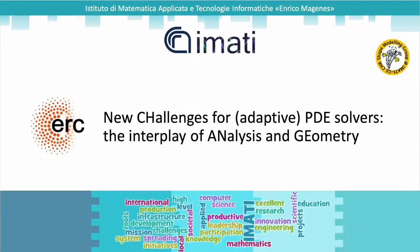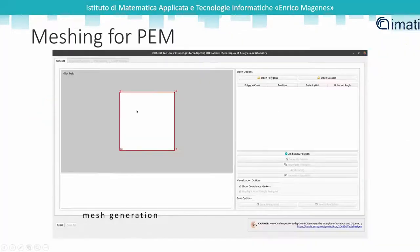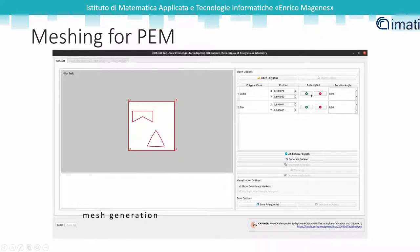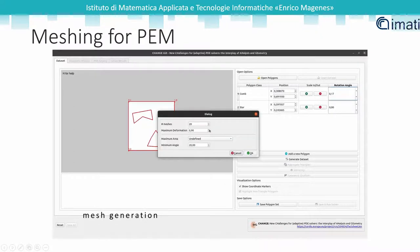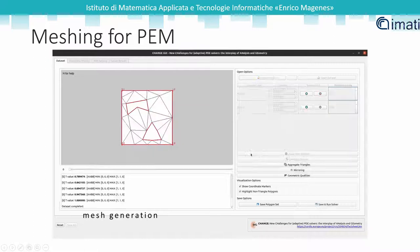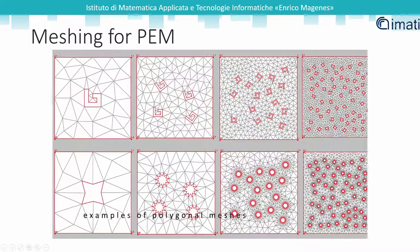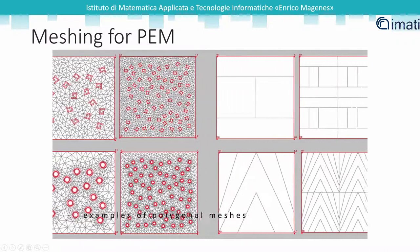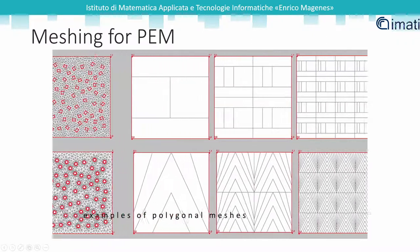IMATI is involved in the ERC Advanced Grant CHANGE, which aims to make geometry processing become PDE-aware, and vice versa. We design tools able to embrace geometry and analysis within the same paradigm, admitting into the subdivision of a shape any type of polytopal elements in addition to the traditional triangular and quadrangular or tetrahedral and hexahedral elements.